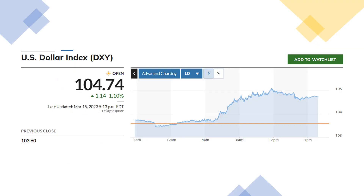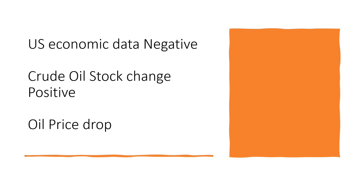The dollar index is at 104.74 points. This is a 1% increase in the situation; the dollar index is closed. The US trading session released US economic data — all the US economic data is negative. The reason is that the dollar index is weak, so the gold price is much higher in trade. That is the initial report.